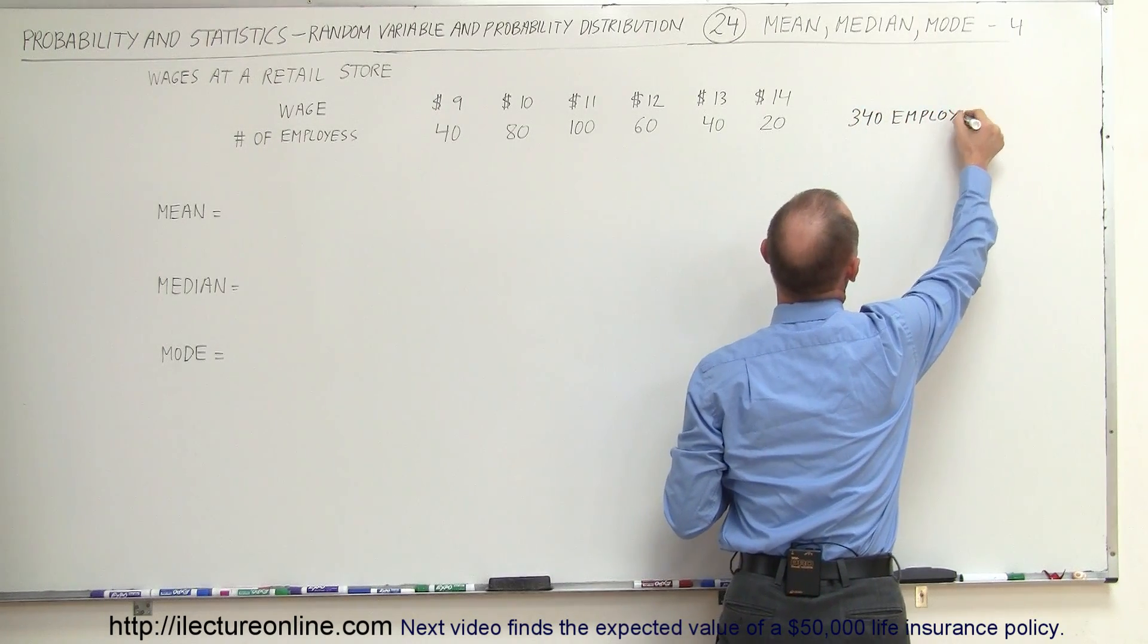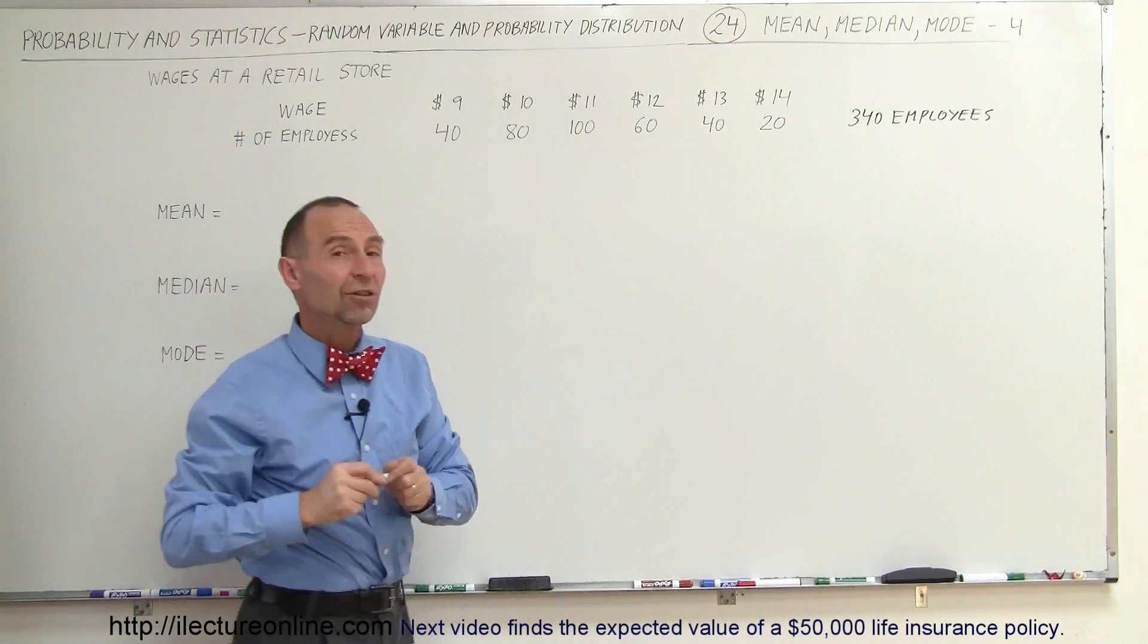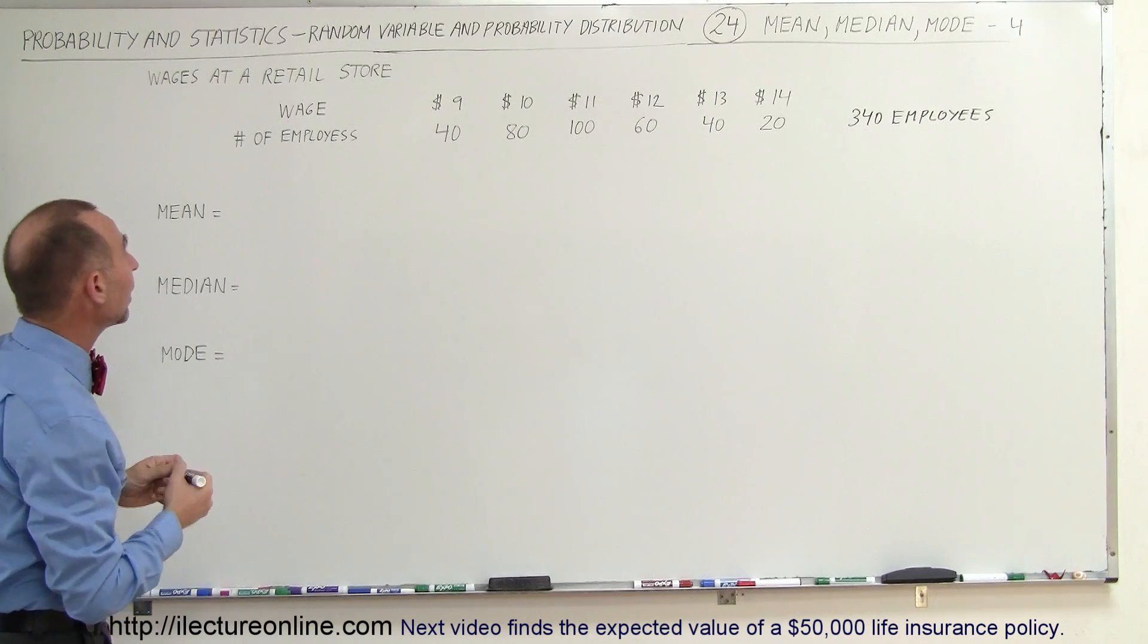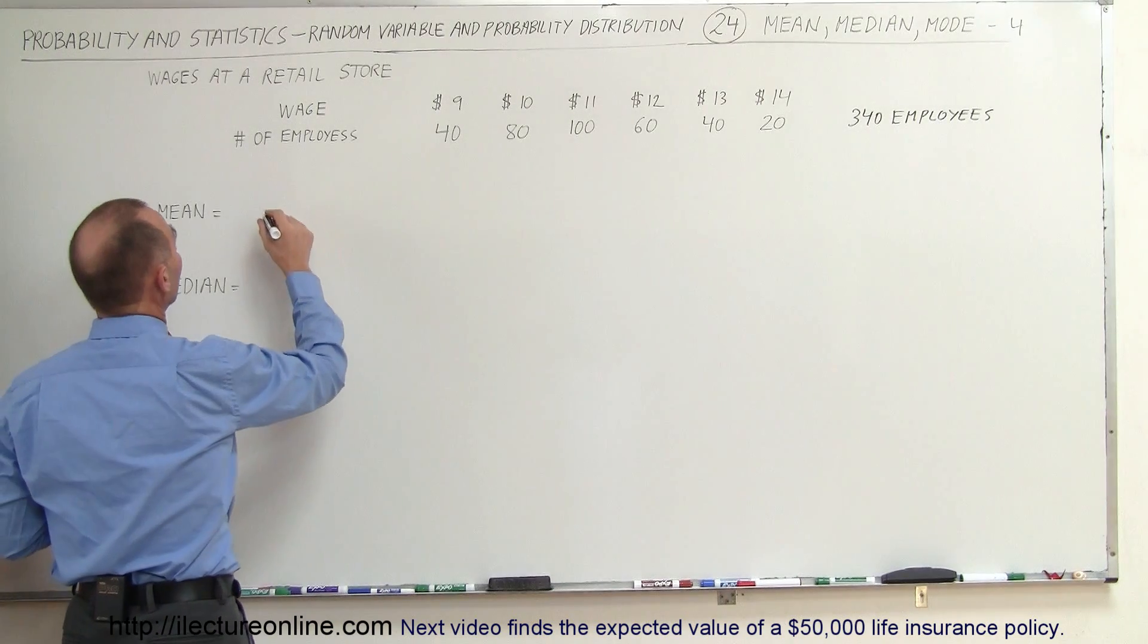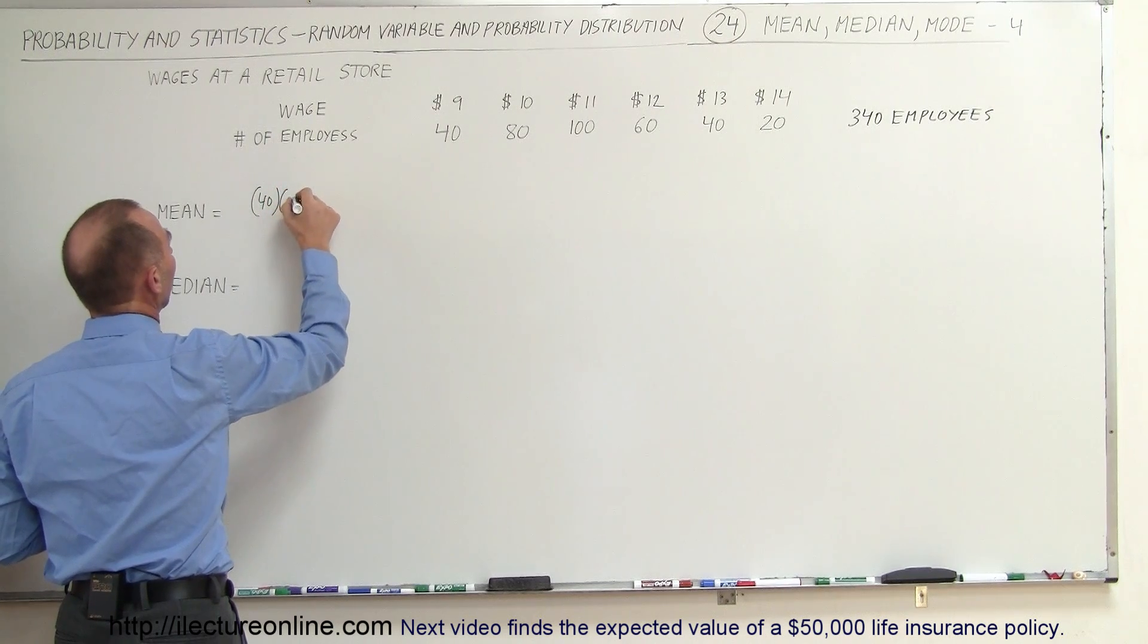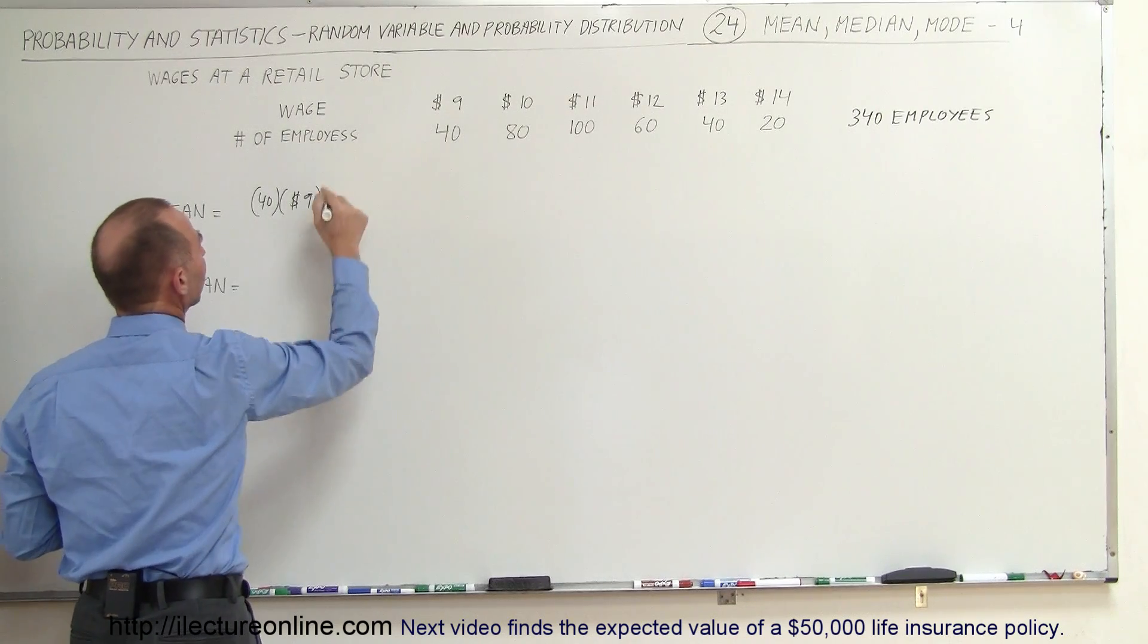So if we're going to try and calculate what is the average wage, well, then we would have to add up the wage of each employee and divide it by the total number of employees. So one way to do that would be to say, alright, we have 40 employees that are earning $9, and so we're going to multiply that times $9. So that's the total amount of money earned by those employees earning $9.